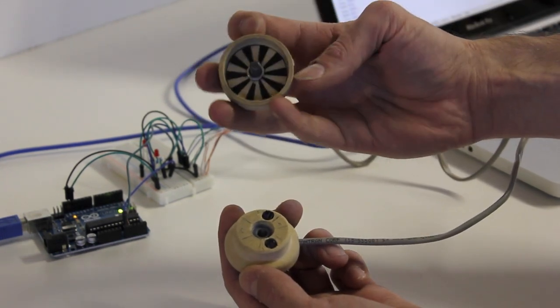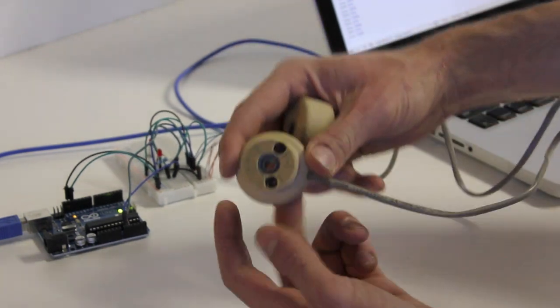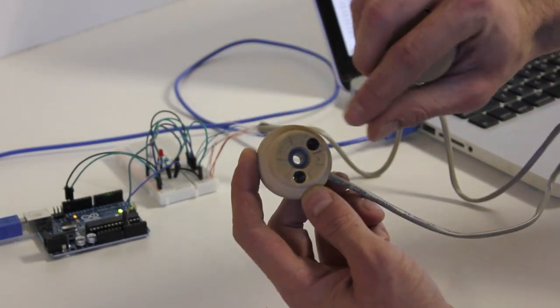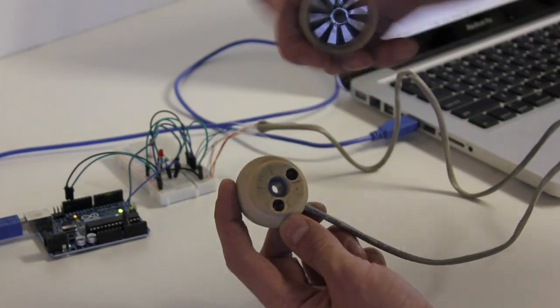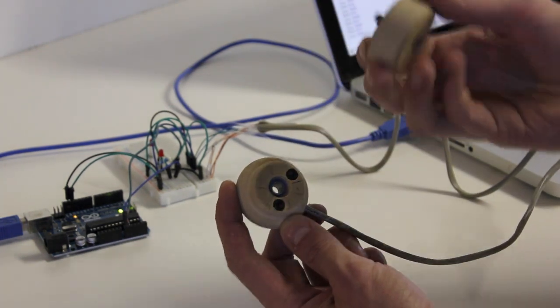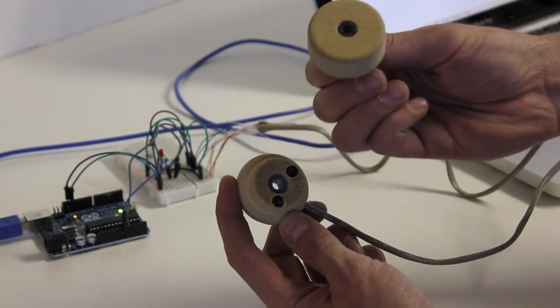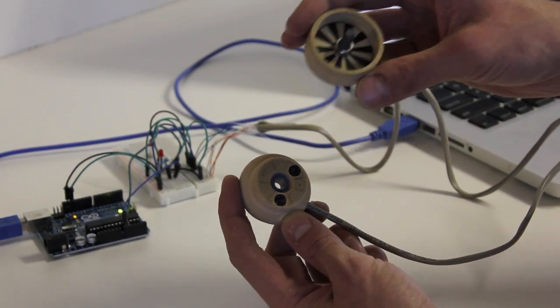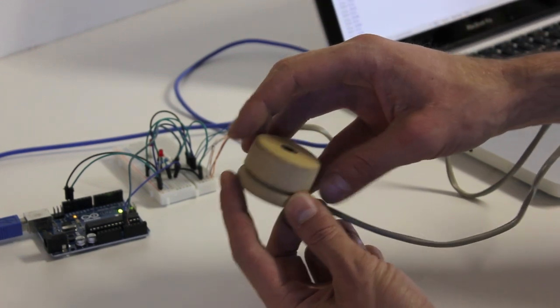Basically we have a rotary encoder that I printed on laser printer on transparency, two optical infrared emitters and detectors, some ball bearings which just so happened to fit this M6 hex cap screw, and so that just kind of fits in there.